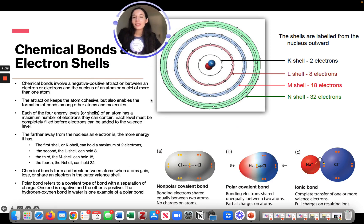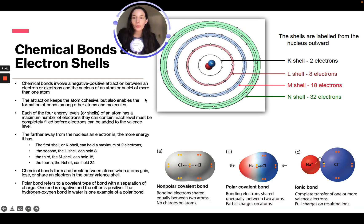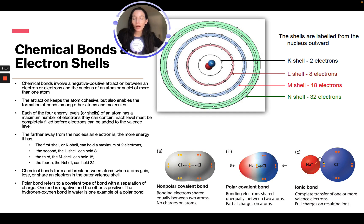Chemical bonds involve a negative-positive attraction between electrons and the nucleus of an atom, or the nuclei of more than one atom. This attraction keeps atoms cohesive but also enables the formation of bonds among other atoms and molecules. Each of the four energy levels or shells has a maximum number of electrons they can hold, and each level must be completely filled before electrons can be added to the next. The further away from the nucleus an electron is, the more energy it has.